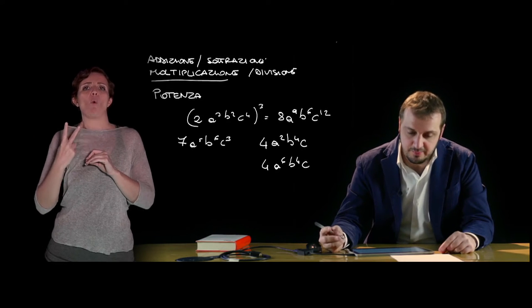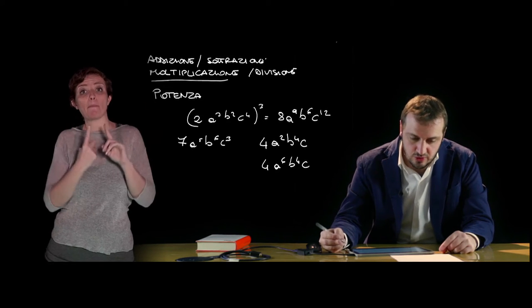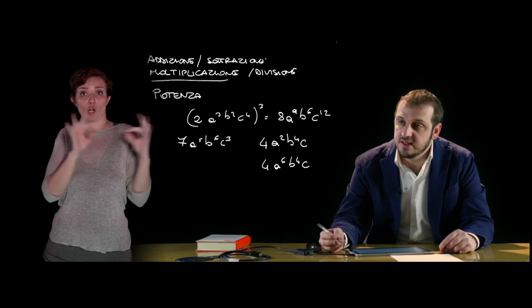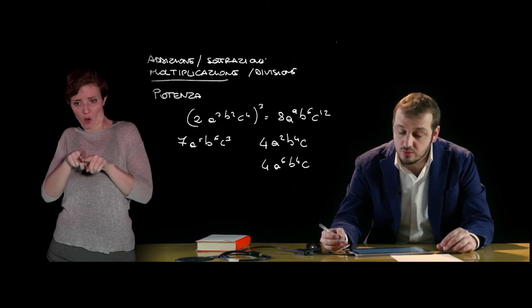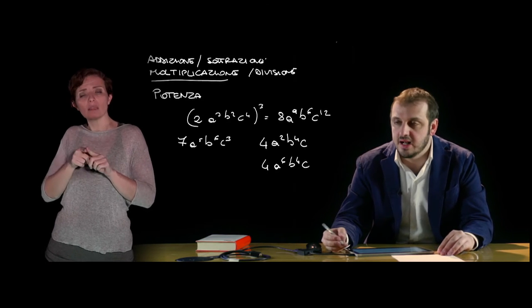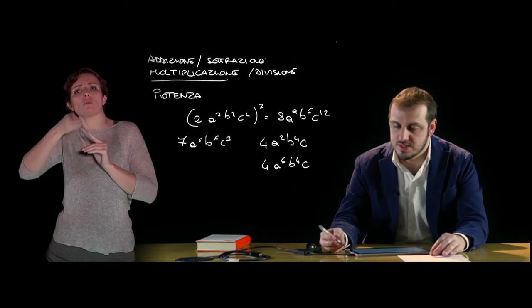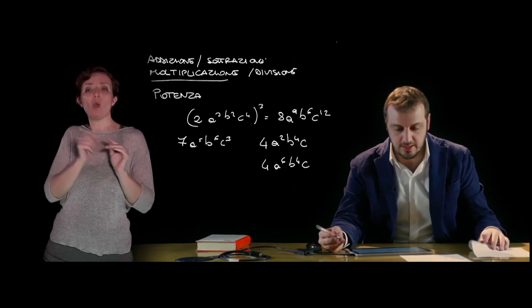Se il primo monomio è divisibile per il secondo, il loro quoziente è un monomio che ha come coefficiente il quoziente dei coefficienti e come parte letterale il quoziente delle parti letterali.